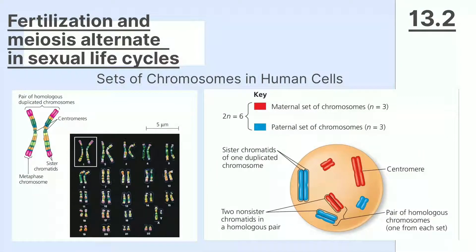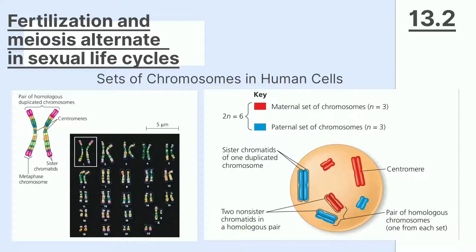Jumlah sel somatik manusia adalah 46 kromosom atau 23 pasang kromosom. Sel somatik manusia merupakan diploid. 23 pasang sel ini disebut kromosom homolog, yang berarti mengandung gen yang sama di tempat yang sama. Karyotype merupakan gambaran dari 23 pasang kromosom. 22 pasang kromosom disebut autosom, sedangkan pasangan ke-23 disebut kromosom seks karena menentukan jenis kelamin seseorang. XX untuk perempuan dan XY untuk laki-laki. Kromosom X dibawa oleh sel telur, dan sel sperma membawa kromosom X atau Y.